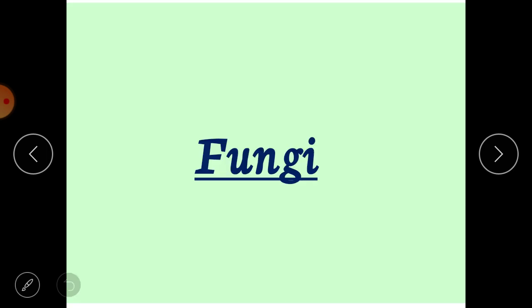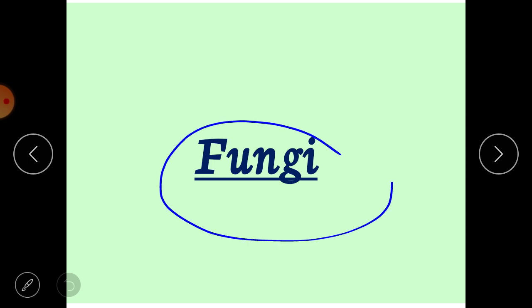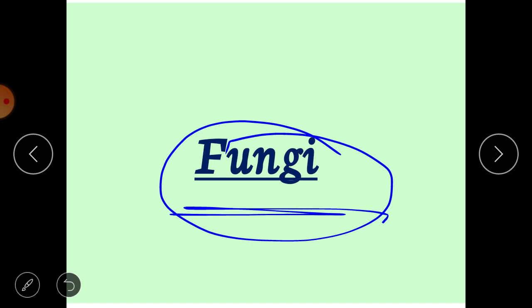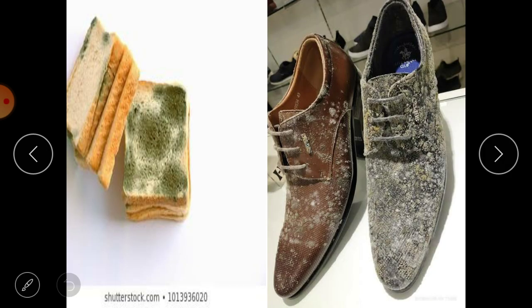Now we are going to discuss about fungi. Earlier, fungi was considered a plant, but now it is not classified as a plant — we consider it a different category, and the name of that category is fungi. Some fungi are useful and some are harmful. Fungi can be found as dusty patches on bread, on cheese, and on books.